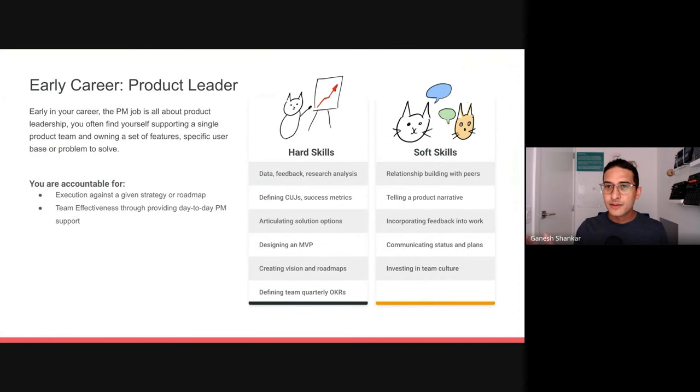Early in your career, the PM job is all about product leadership. You often find yourself on a small, single product team. You own a set of features, a specific user base, or a problem to solve. Back when I first started my career at Google, I was a PM for Google Drive on Android. A very small team, a couple of engineers, a designer, supporting the full product 100% of the time. My mandate was to take what we knew of the then early cloud customers on mobile and just expand user adoption and happiness. This is a very standard example of what an early career problem looks like. Relatively well-scoped problem, general direction to go in.